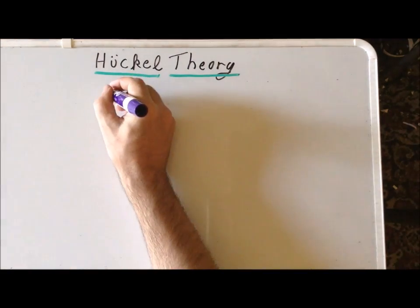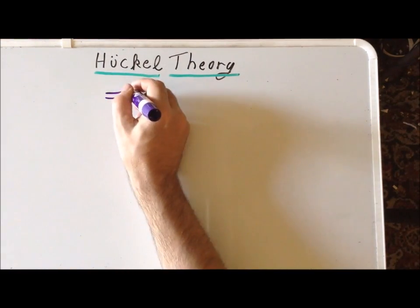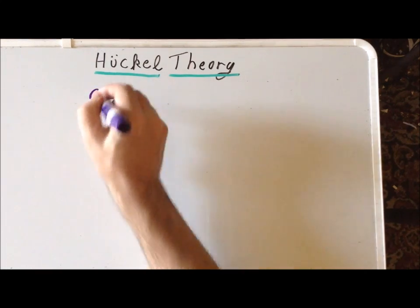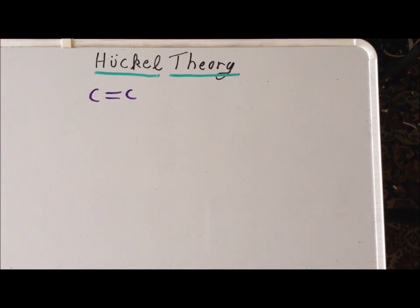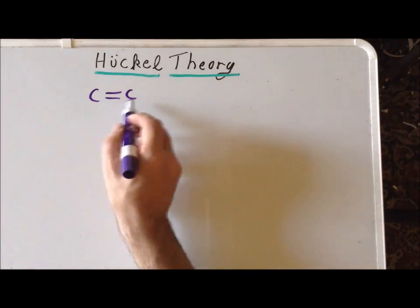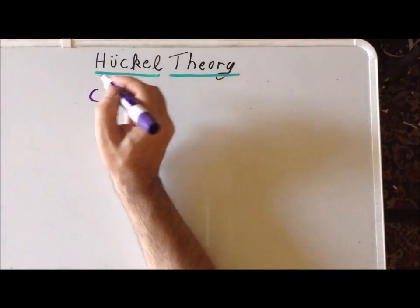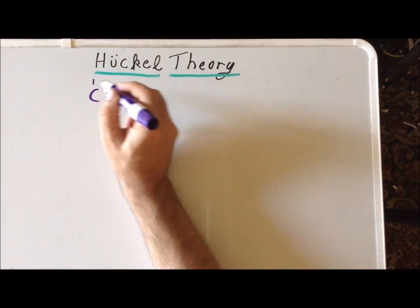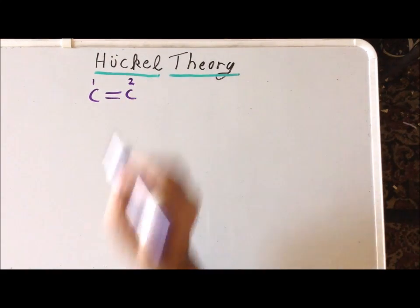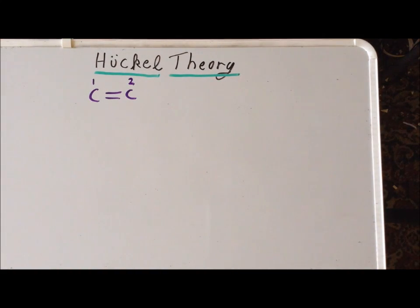First, recall that the carbon skeleton of ethylene can be written this way. We have a carbon-carbon double bond, and we can label the carbon atoms involved in the pi-conjugated system as 1 and 2.